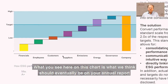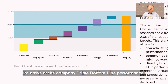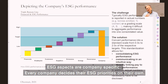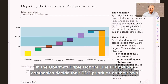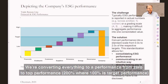What you see here on this chart is what we think should eventually be in your annual report, where you have financial performance and you're adding all the other aspects of performance to arrive at a company performance. We decided that these are aspects important for this company, but every company decides on their own what their priorities are, while using the same method to arrive at an overall company performance — converting everything to a performance scale from zero to top.